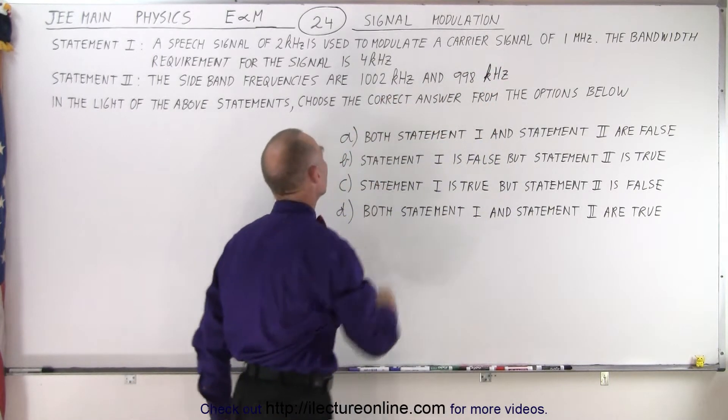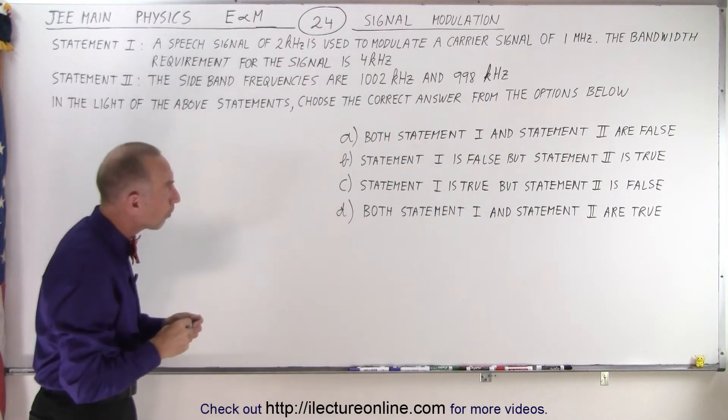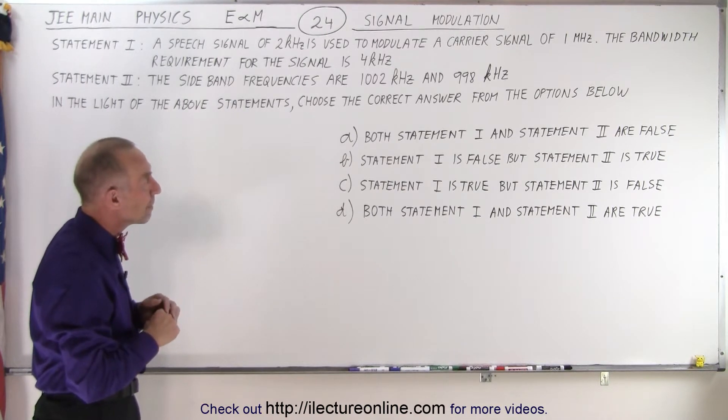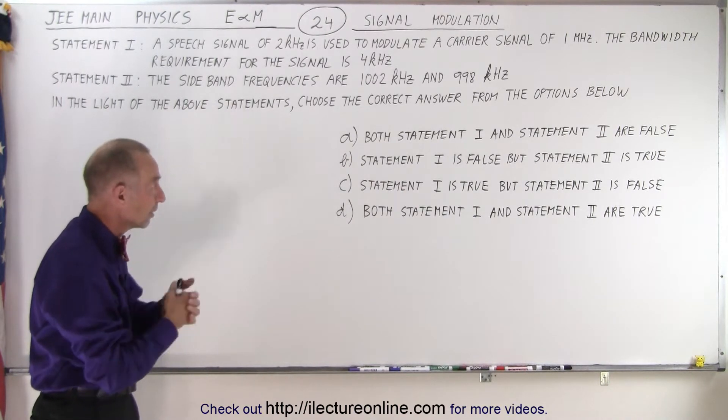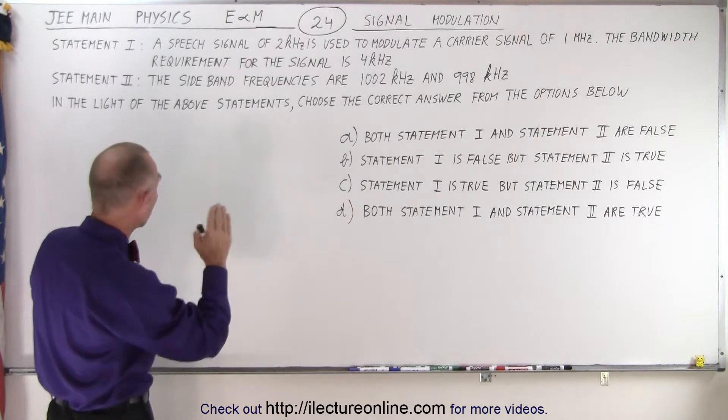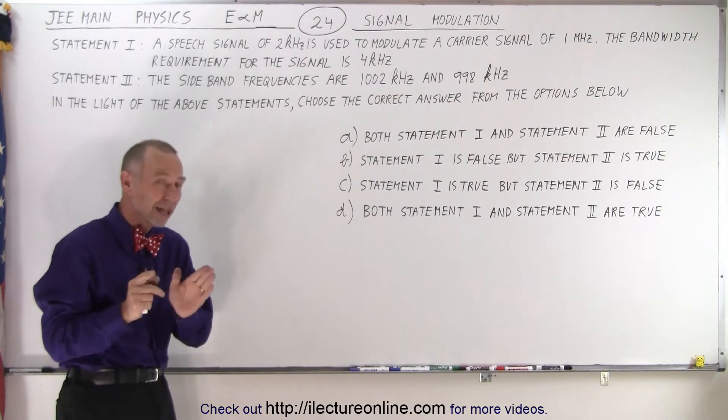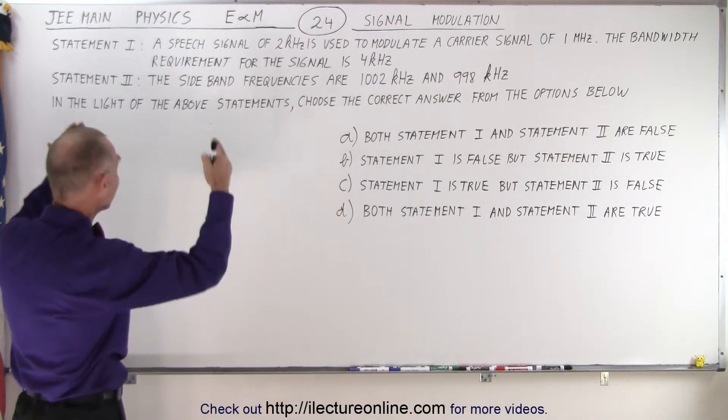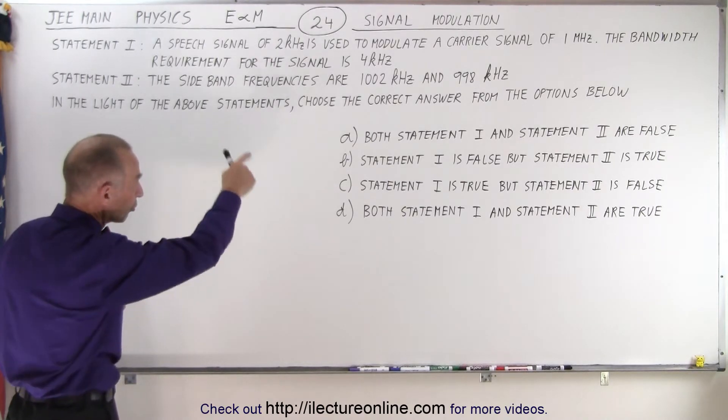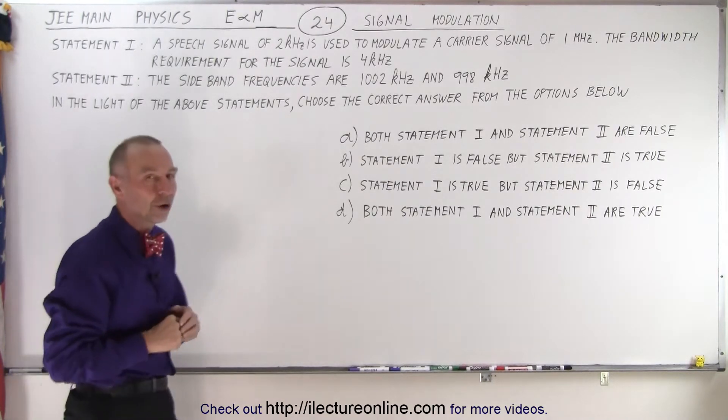So either it's 1.002 megahertz or 0.998 megahertz. Or in other words, 1002 kilohertz and 998 kilohertz. Those are what we call the sideband frequencies. Now, they're asking us, based upon those two statements, which of the four following answers are correct.